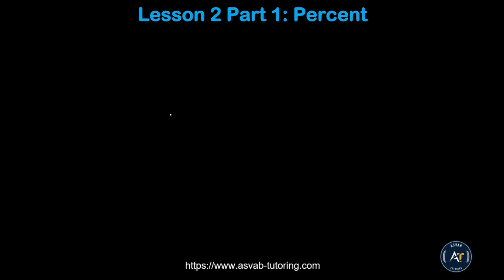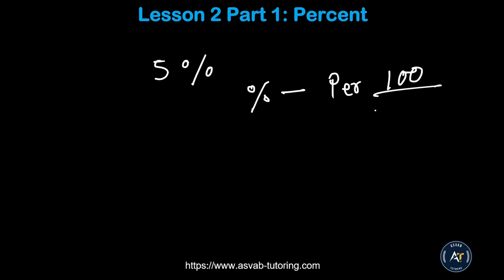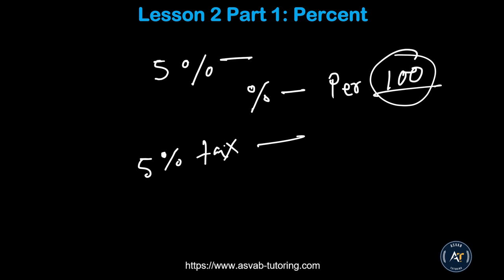Before we do anything, let me ask you: what does percent mean to you? When you hear the word percentage — the percent sign — what does it mean? What does a five percent discount mean? Percent means 'per 100.' One dollar equals 100 cents — it comes from 'out of 100.' So a five percent discount means five dollars off every hundred dollars. Five percent tax means you pay an extra five dollars on every hundred dollars.